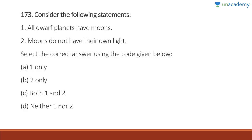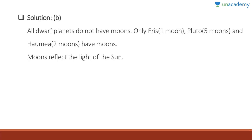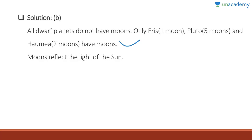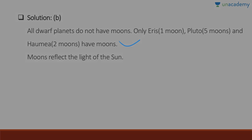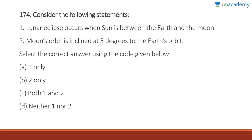Among dwarf planets, only Eris has one moon, Pluto has five moons, and Haumea has two moons. Moons reflect the light of the sun — they do not have their own light.